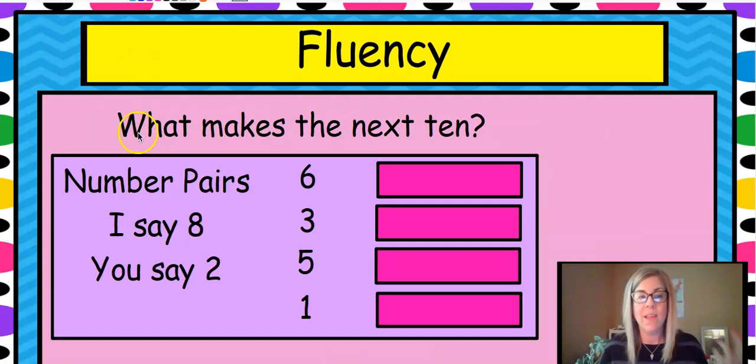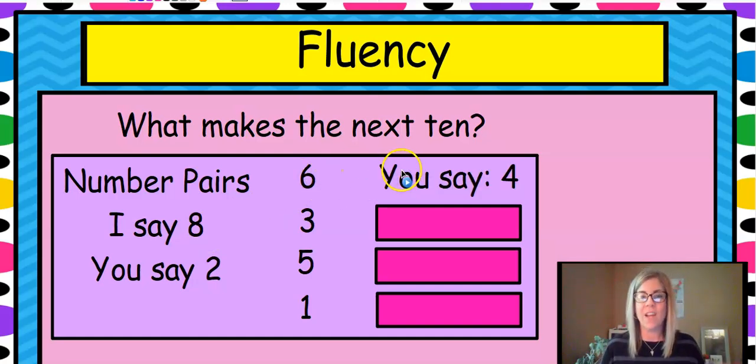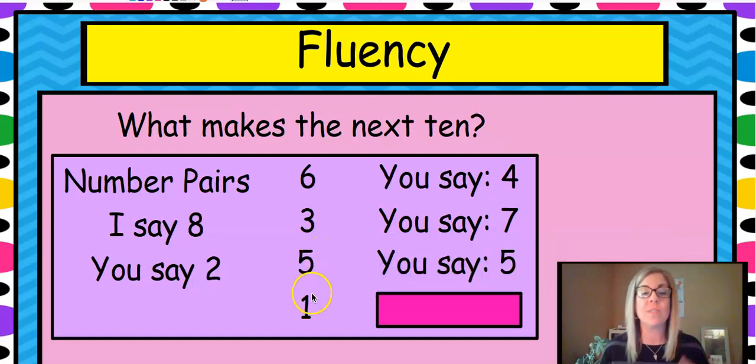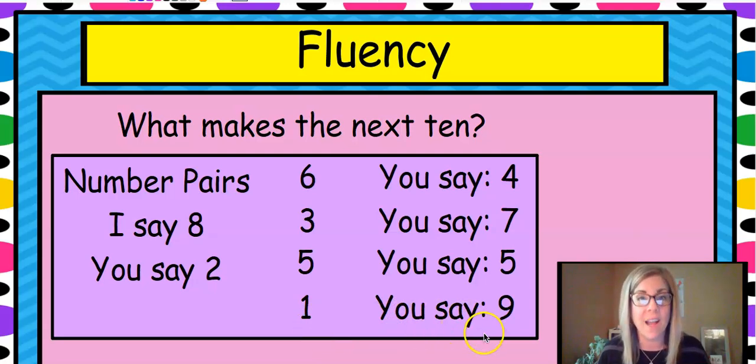So what makes the next 10? We are talking about number pairs. So what two numbers go together in our partners to make 10. I would say 8, and you would say 2, because 8 plus 2 equals 10. So we're going to do it pretty quick, and we're going to start with 6. If I say 6, you say 4. That's right. 6 plus 4 equals 10. I say 3. You say 7.